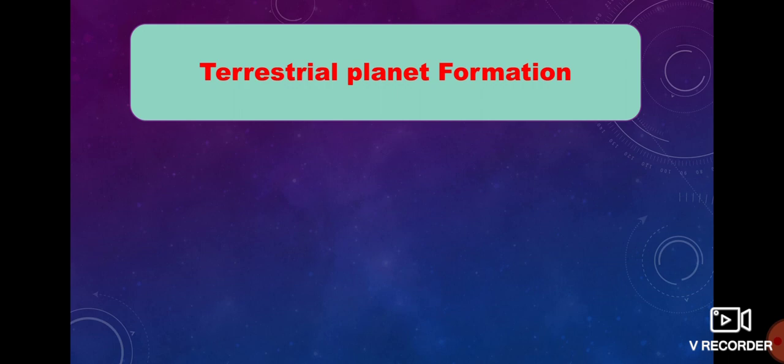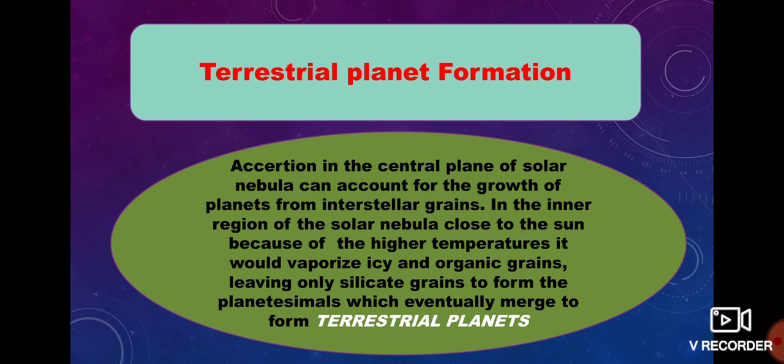Now, terrestrial planet formation. Accretion in the central plane of the solar nebula accounts for the growth of planets from interstellar grains. In the inner region of the solar nebula, close to the Sun, the higher temperature would vaporize icy and organic grains, leaving only silicate grains to form planetesimals, which eventually merge to form the terrestrial planets.